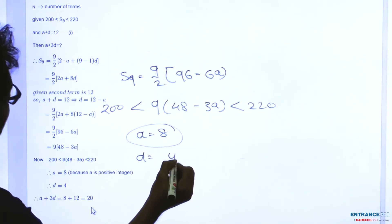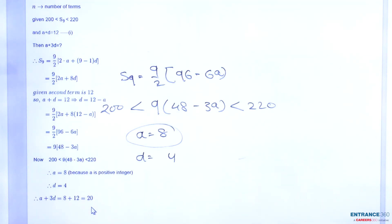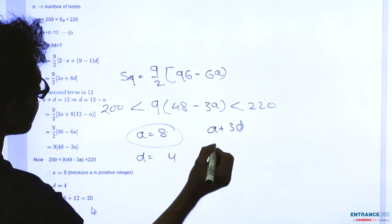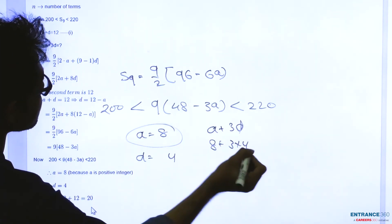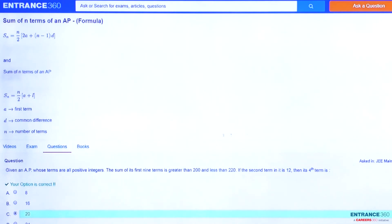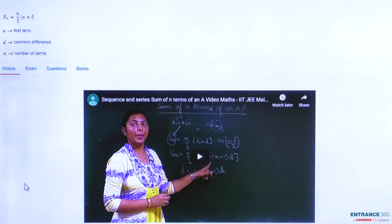Then d = 4, because the second term a + d = 12, so 8 + 4 = 12. Now we find the fourth term: a + 3d = 8 + 3(4) = 20. So the fourth term is 20. Checking the options, our answer of 20 is correct.